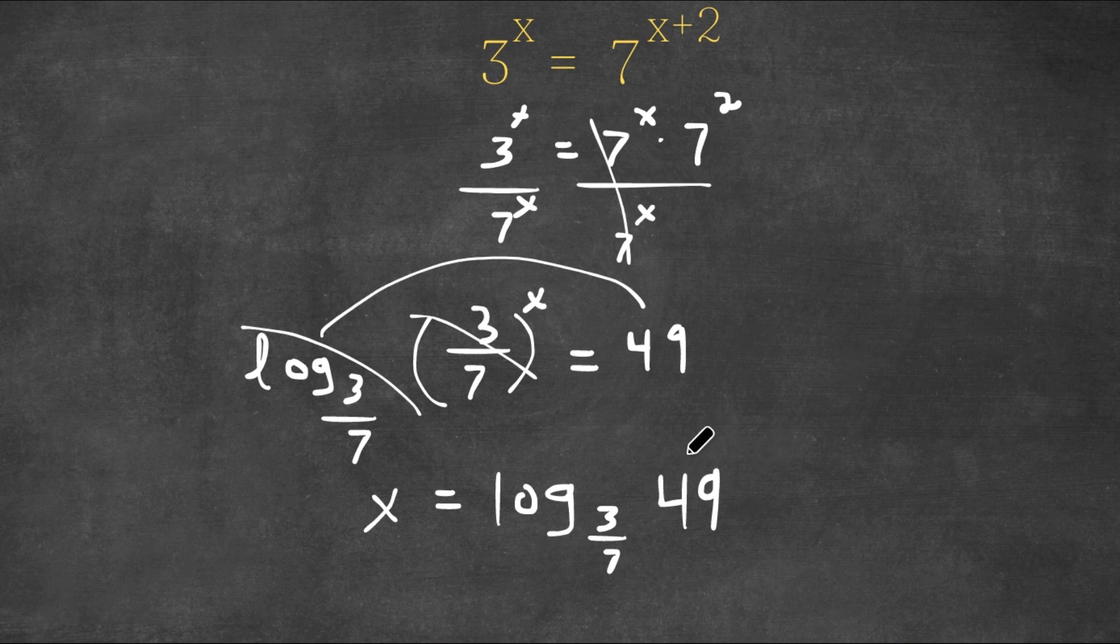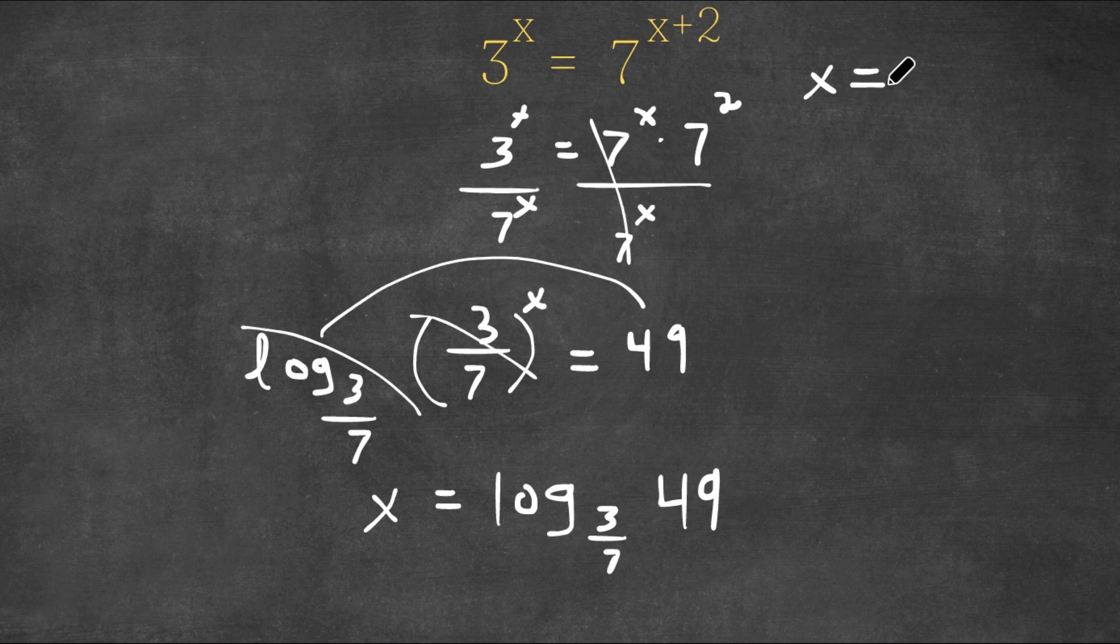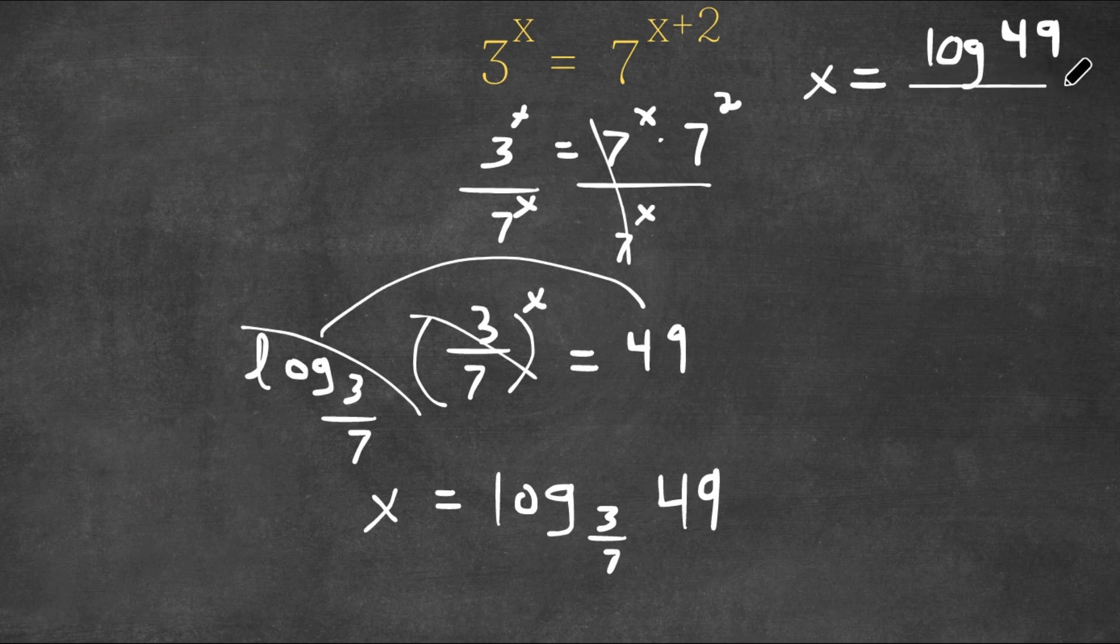And although this is right, this can actually be simplified. I can rewrite this using the change of base formula for logarithms, and x is equal to log 49 over log 3 over 7.